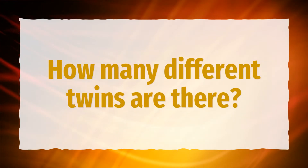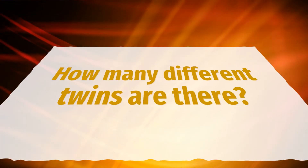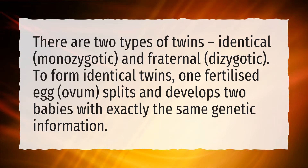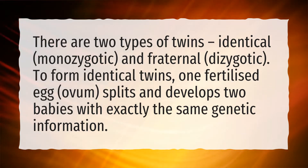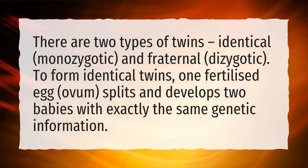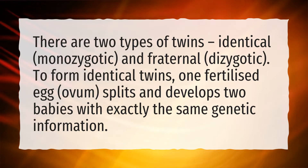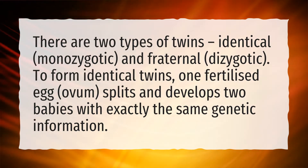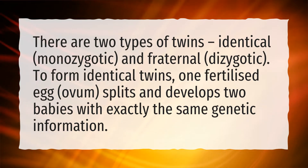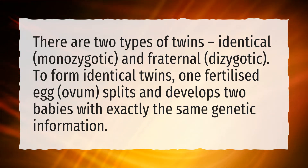How many different types of twins are there? There are two types of twins: identical (monozygotic) and fraternal (dizygotic). To form identical twins, one fertilized egg splits and develops into two babies with exactly the same genetic information.